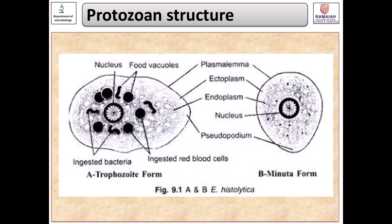The morphological structures described for the trophozoite form are also true for the minuta form, with the key difference that the minuta form is smaller in size, does not have pseudopodia or has very poorly developed pseudopodia, and does not contain food vacuoles or contractile vacuoles. The minuta form lives in the lumen of the intestine and is rarely found in tissues. The trophozoite form has the capability of invading other organs, while the minuta form undergoes encystation and helps in transmission to a new host.